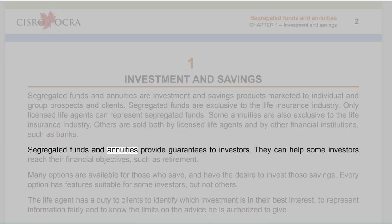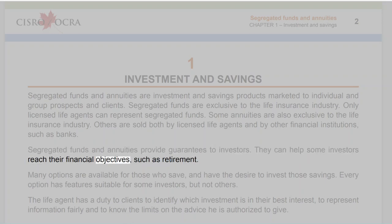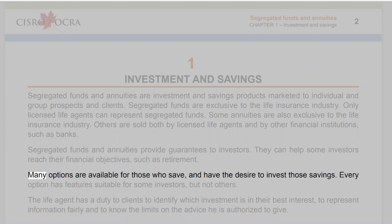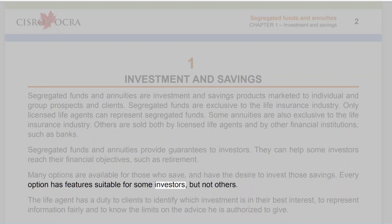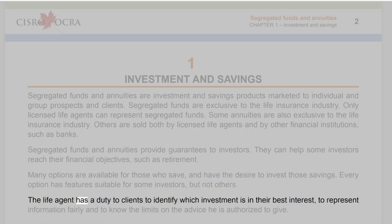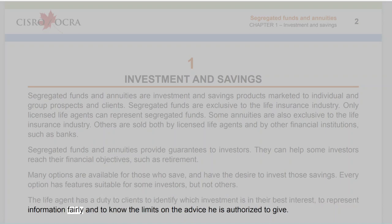Segregated funds and annuities provide guarantees to investors. They can help some investors reach their financial objectives, such as retirement. Many options are available for those who save and have the desire to invest those savings. Every option has features suitable for some investors but not others. The life agent has a duty to clients to identify which investment is in their best interest, to represent information fairly, and to know the limits on the advice he is authorized to give.